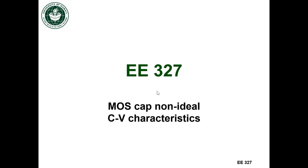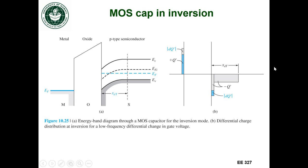All of those capacitance-voltage curves and behavior that we looked at was for the ideal case. Now let's look at what happens in the non-ideal case. We'll first look at inversion. Here's our MOS capacitor in inversion.